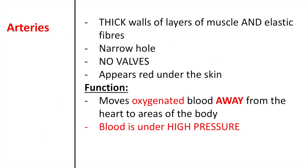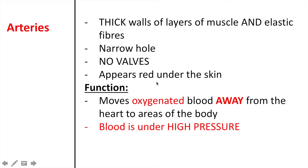Arteries are the largest of the three kinds of blood vessels. They are made of thick walls of layers of muscle and elastic fibers. The hole — also known as the bowl, or lumen — is the space available in the blood vessel through which blood travels. Arteries do not have valves. Valves are flaps of tissue found inside the blood vessel that open and close, controlling the direction and flow of blood. Arteries appear red under the skin. Their function is to move oxygenated blood away from the heart to other areas of the body that need it.